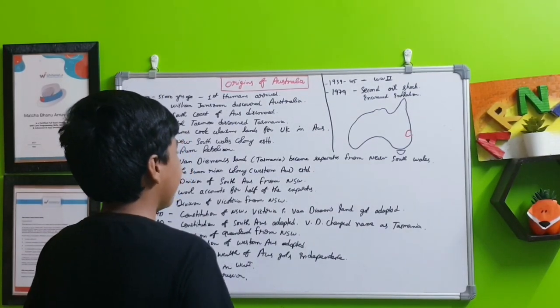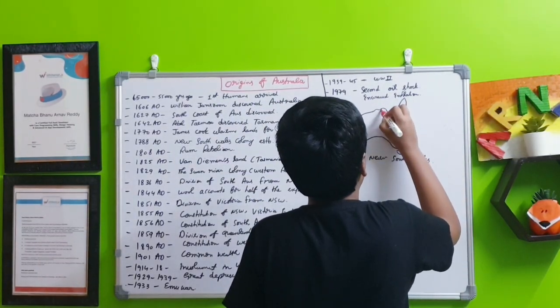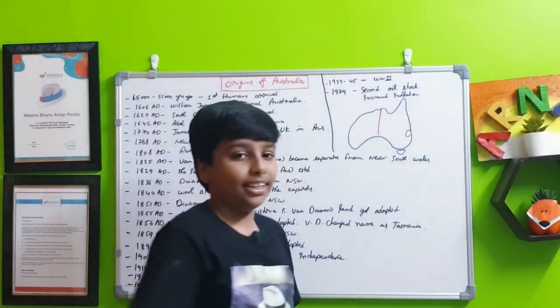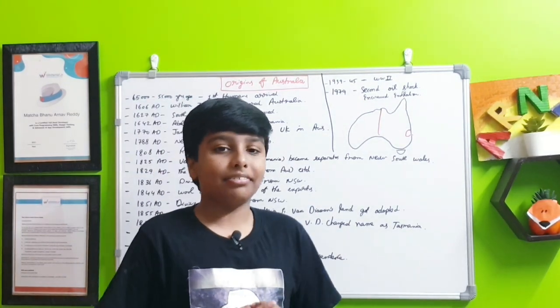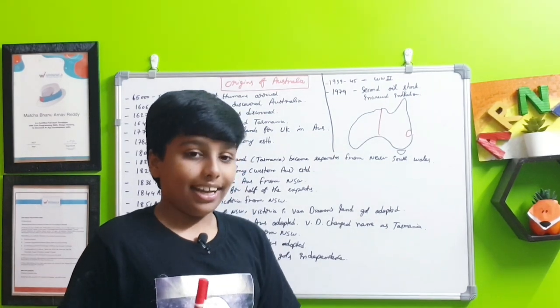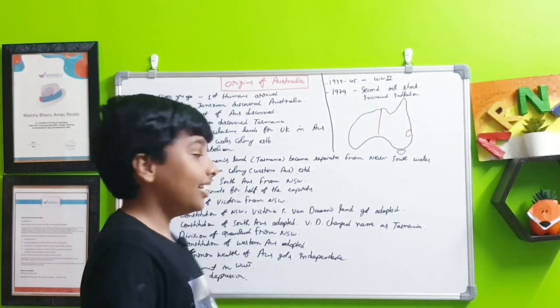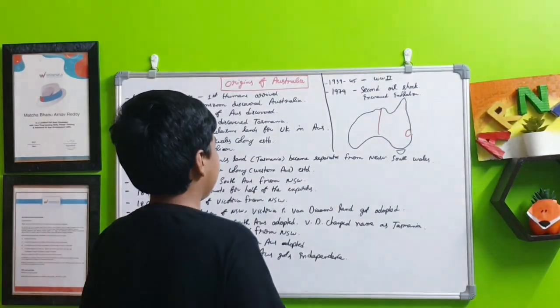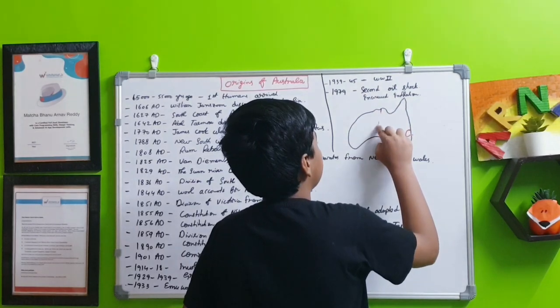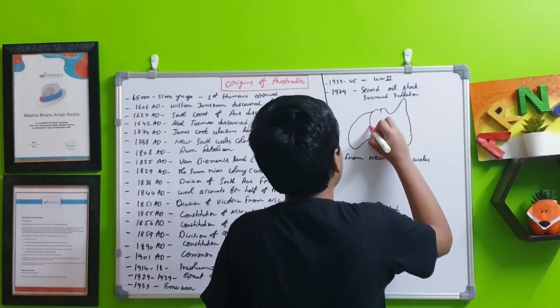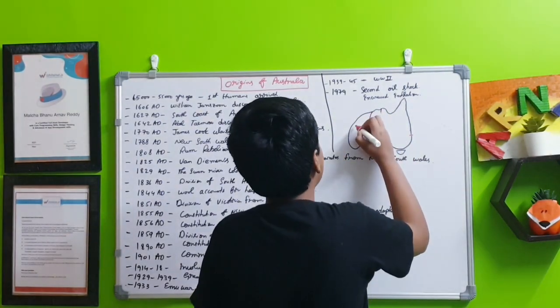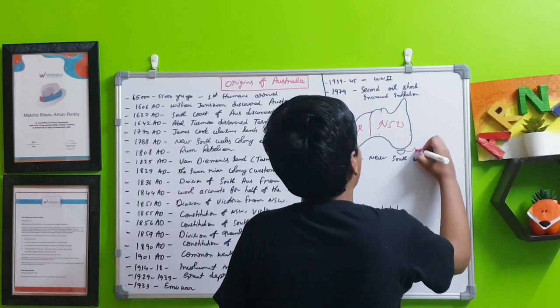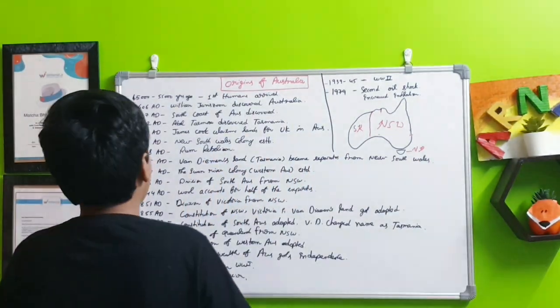In 1825 AD, Van Diemen's Land which is Tasmania became separate from New South Wales. By that time New South Wales already became like this size. It got separate and was known as Van Diemen's Land until 1856, not diamonds but Diemen's. In 1829 the Swan River colony which is present day Western Australia is established.